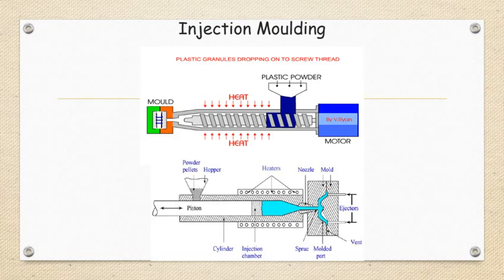In the third step, a motor turns a thread which pushes the granules along the heater section where they melt into liquid. The liquid is then forced into a mold where it cools into a shape. In the fourth step, the mold is opened and the unit is removed. The mold keeps closed until the material is solidified, then the mold is opened, the object is ejected, and we get a solidified component.